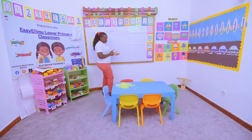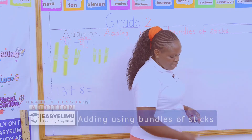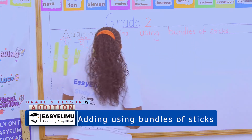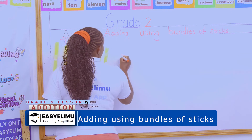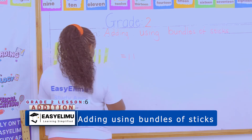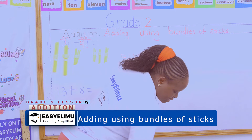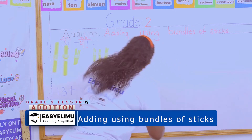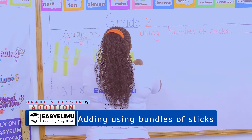Let me count all of them together: one, two, three, four, five, six, seven, eight, nine, ten, eleven. So when I add my four ones to seven ones I get eleven sticks. These are the eleven sticks that I'll get — I'll get one bundle and one stick.